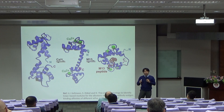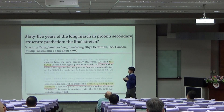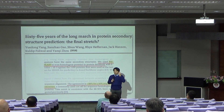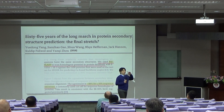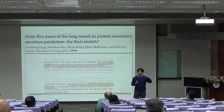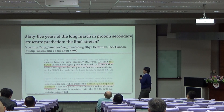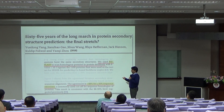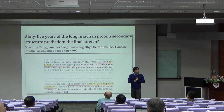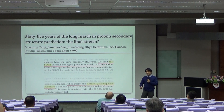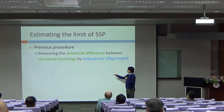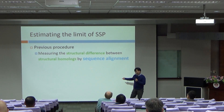The structural difference between structural homologues — this is what people studied in the last 20 years. There were four famous groups that performed experiments to estimate the upper limit of SSP, and all their conclusions were the same: 88%. After looking very carefully into their research, we found something very contradicting, because all of them measured the structural difference between structural homologues by sequence alignment.